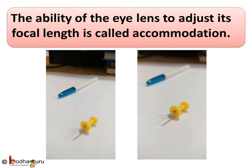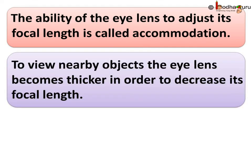This ability of the eye lens to adjust its focal length is called accommodation. Remember, to view nearby objects, the eye lens becomes thicker in order to decrease its focal length.